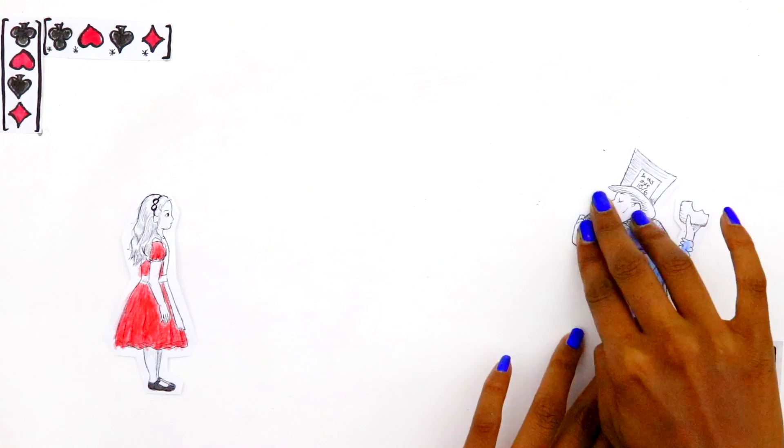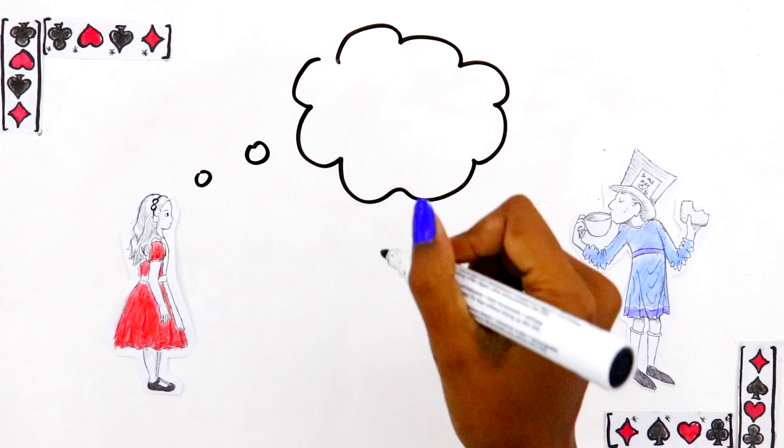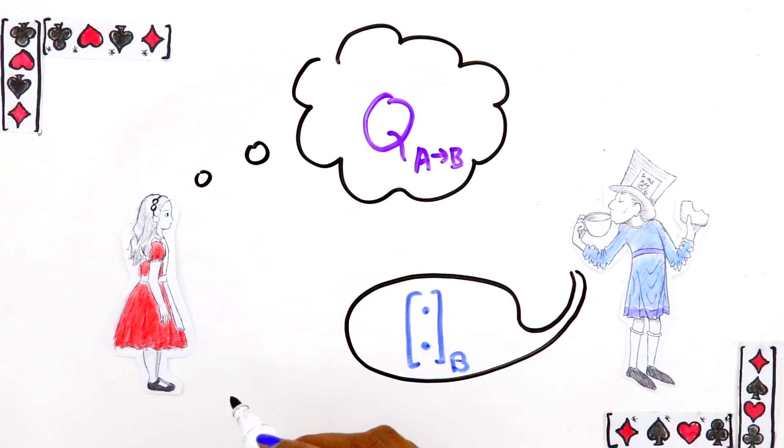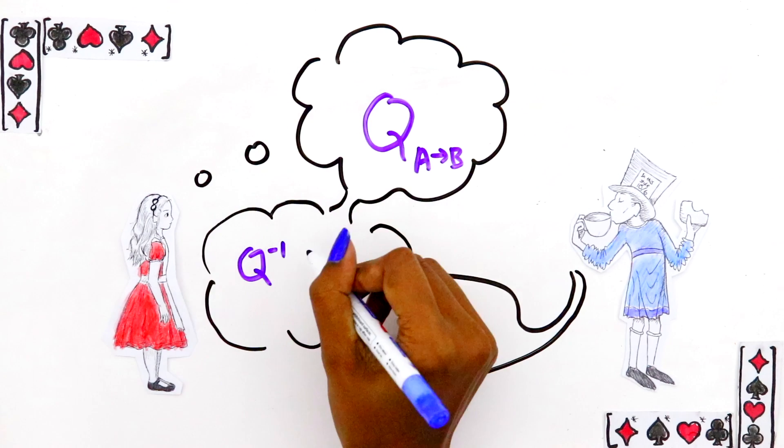So once Alice has figured out what the change of basis matrix Q is, if she wants to translate a vector Bob tells her to something she understands, she just applies Q inverse to it.